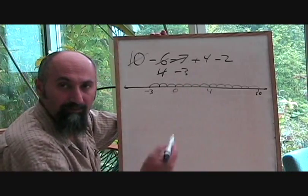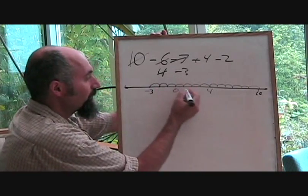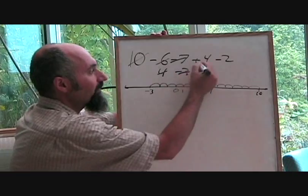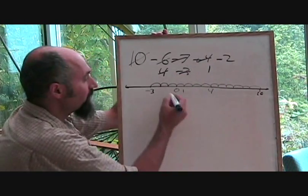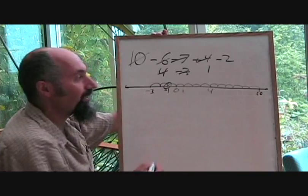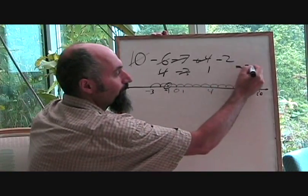And then negative 3 plus 4. Now you're moving forwards again. You're going to end up at 1. So negative 3 plus 4 is 1. And then 1 minus 2 is going to be negative 1. So your answer is just going to be negative 1.